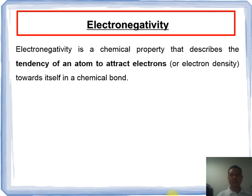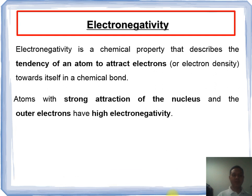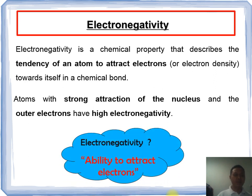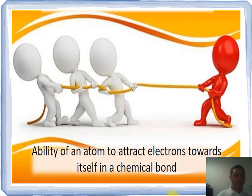Electronegativity is a chemical property that describes the tendency of an atom to attract electrons to itself in a chemical bond. Atoms with strong attraction of the nucleus and the outer electrons have high electronegativity. Electronegativity refers to the ability of an atom to attract electrons. This illustration can give you an idea about electronegativity.